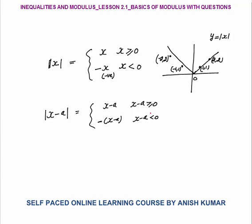So now we have two concepts. The first concept is mod of x minus a, which also represents the distance of any point x on the number line from a. We have two methods to solve modulus questions: the number line concept from the previous lesson, and the conceptual method.